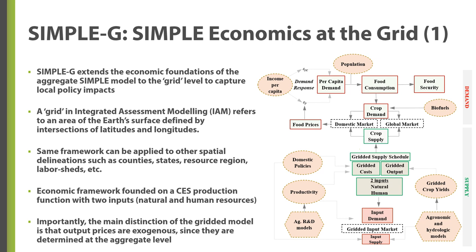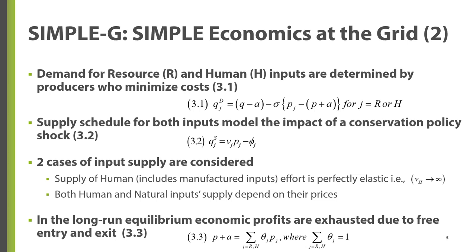The economic framework is founded on a two-input production function involving natural resource and human-produced inputs. The distinguishing feature of the gridded model is that output prices are exogenous to producers in each grid. The equations in this chapter are represented in percentage change terms following an exogenous shock. The change in demand for either input is determined by cost minimization by producers, leading to the derived demand equations in equation 3.1.